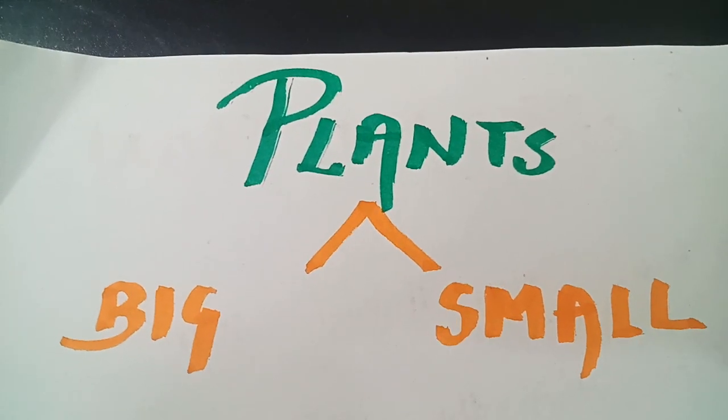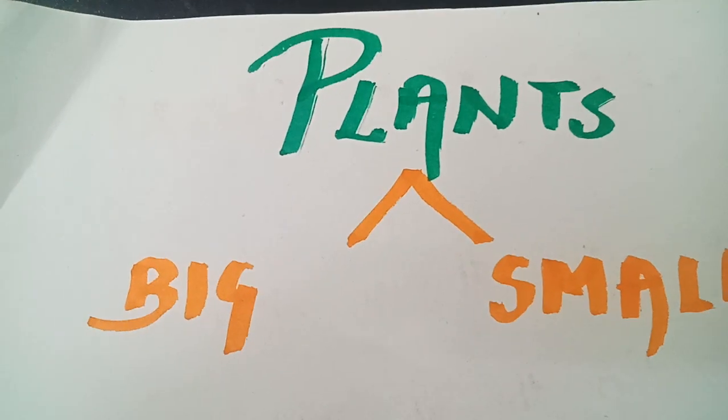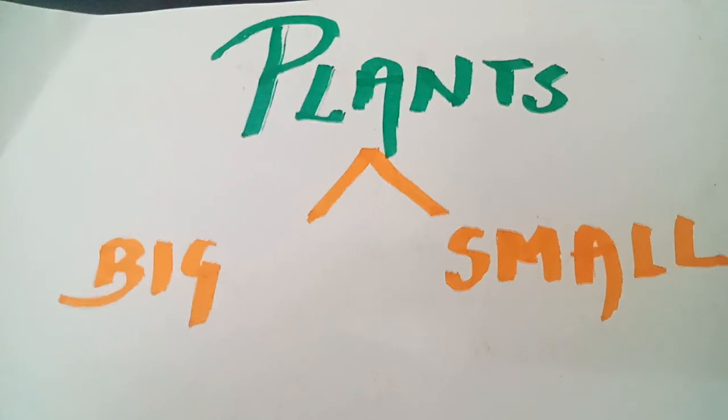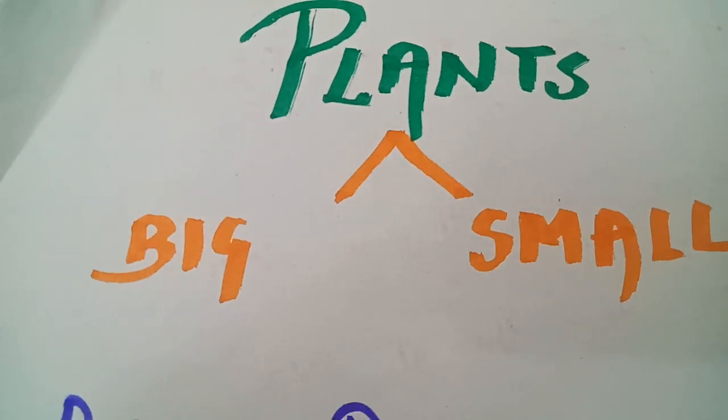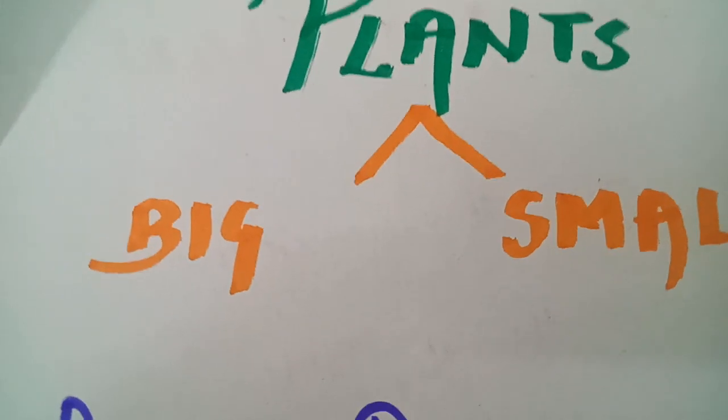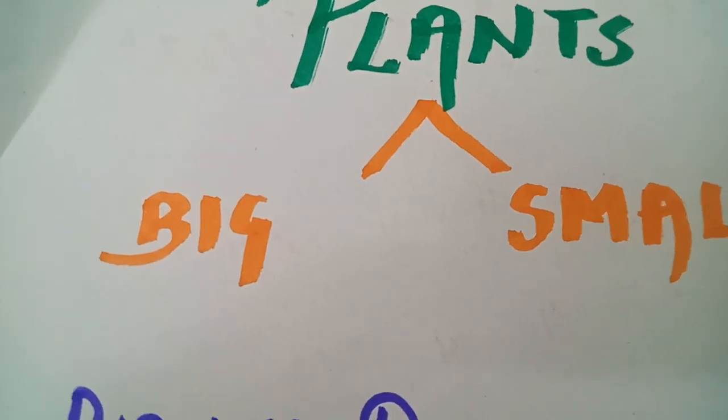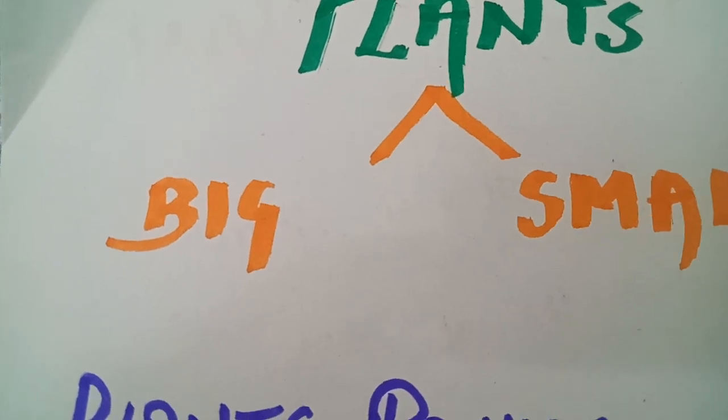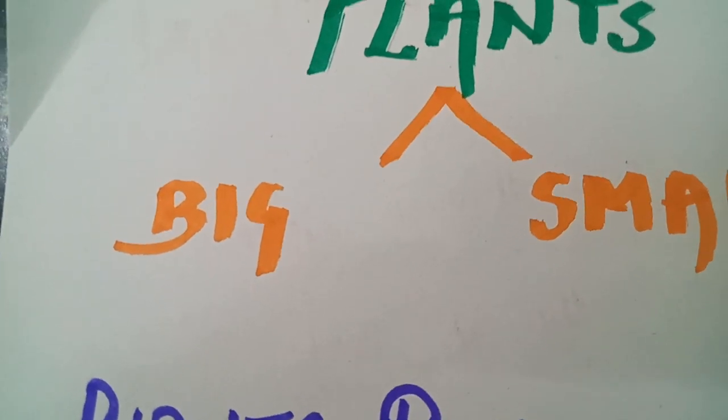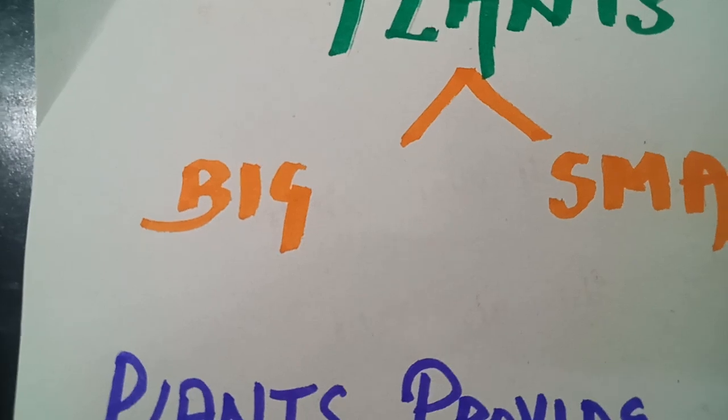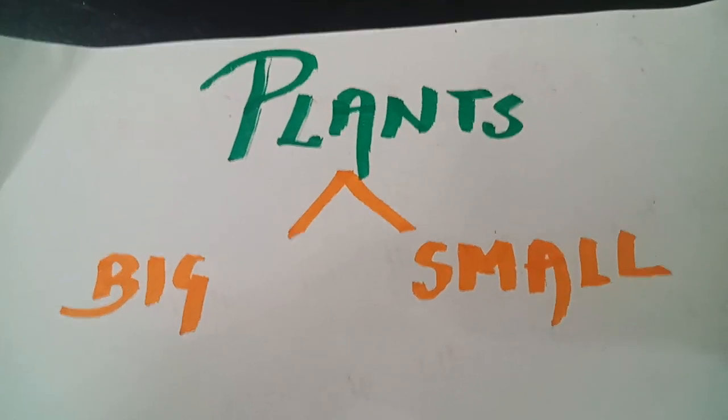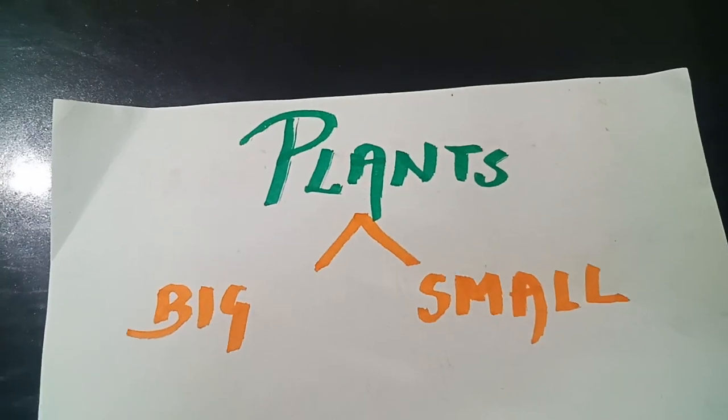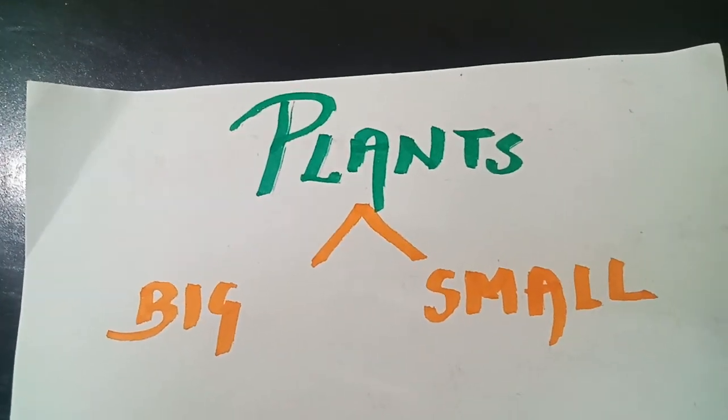Dear students, we studied about plants in chapter 1 but let's revise it again. Plants are eternal beauty on our planet earth. They are present around us everywhere in the parks, roadside, school campus or garden area. Plants are very important for our daily life as they provide us oxygen to breathe and oxygen is the basic necessity for every living organism.